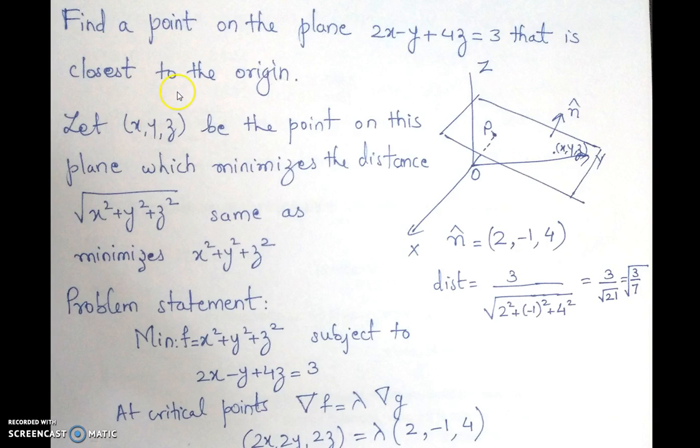So let us take a simple example of finding a point on the plane 2x minus y plus 4z equal to 3 that is closest to the origin.